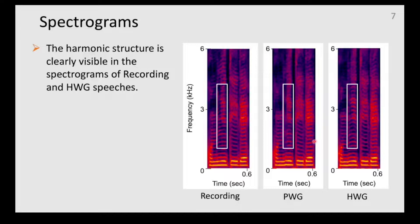The spectrogram of Harmonic Wave GAN shows the harmonic structure more clearly than PWaveGAN. The fact that the spectrogram closely resembles that of the recording suggests that harmonic convolution improves the quality of synthesized speech by emphasizing the harmonic structure.